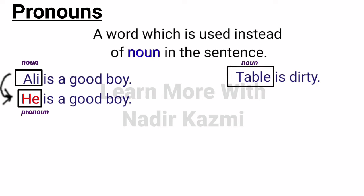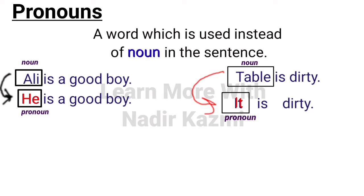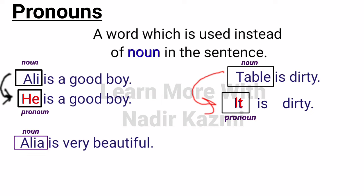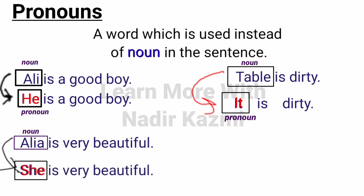Here are other examples. 'Table is dirty' — 'table' is the noun. Now we replace it with 'it': 'It is dirty.' So 'it' is a pronoun replacing the noun 'table'. Another example: 'Alia is beautiful.' Alia is the name of a girl. Now look at another sentence: 'She is very beautiful.' Here 'she' is a pronoun because it replaced the noun 'Alia'. That's why this is a pronoun.